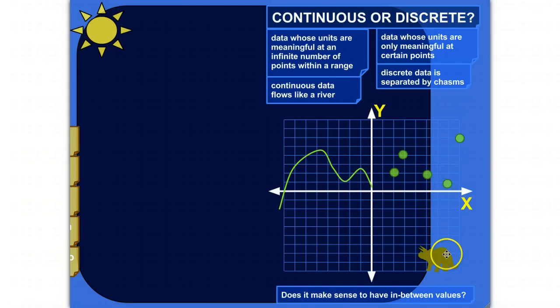And just a simple test for determining whether a data type is continuous or discrete. Just ask yourself, does it make sense to have in-between values? If it does make sense to have in-between values, then you're talking about continuous data. And if it doesn't make sense to have in-between values, if it's just one or the other, then it's probably discrete data. So I'm going to pull in some real-life examples here, and we'll just decide what category each one will fall into.